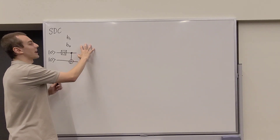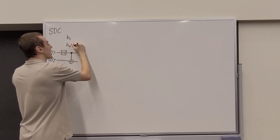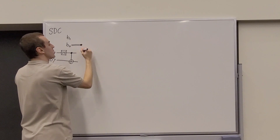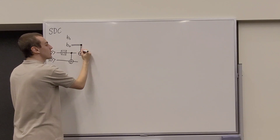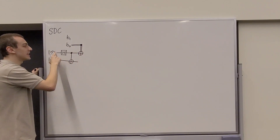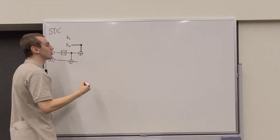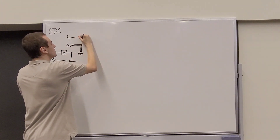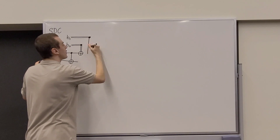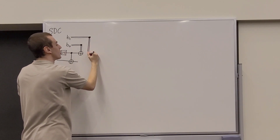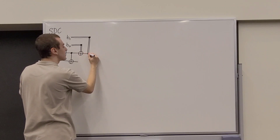The next part of the procedure is done by Alice. She takes the classical bit B0 and uses it to implement a classically controlled NOT gate — a bit flip. She also uses B1 to implement a classically controlled phase flip, which can be thought of as a controlled Z gate. The double lines in the diagram indicate classical bits controlling these gates.